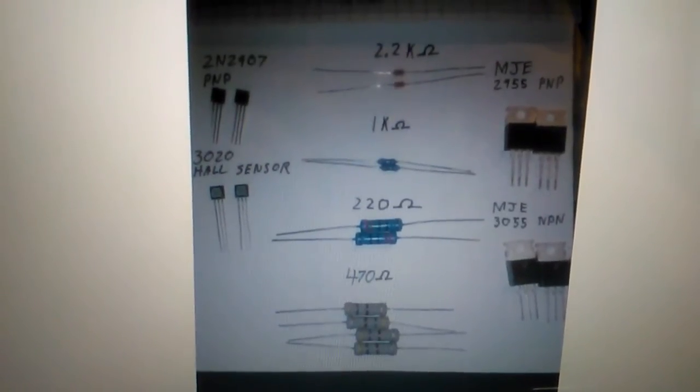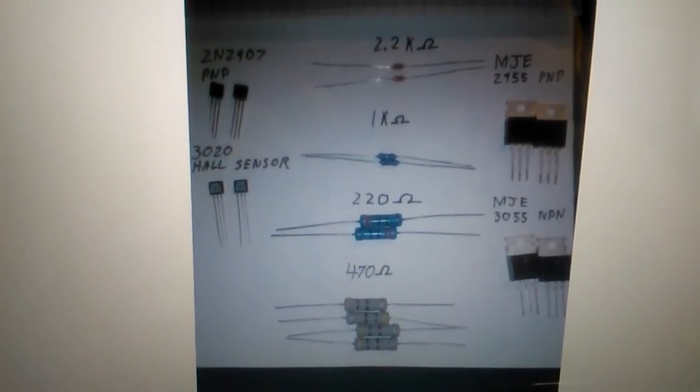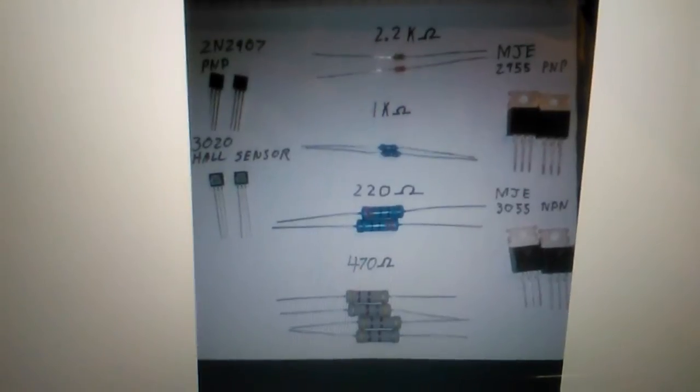Like I said, the 2N2907 PNP transistor is not what's in the original circuit, it's just what I had. But along with this, if you want to get into the efficiency side of things instead of just building a circuit that'll pulse a coil and make a motor, basically if you want to get into the efficiency side of it...